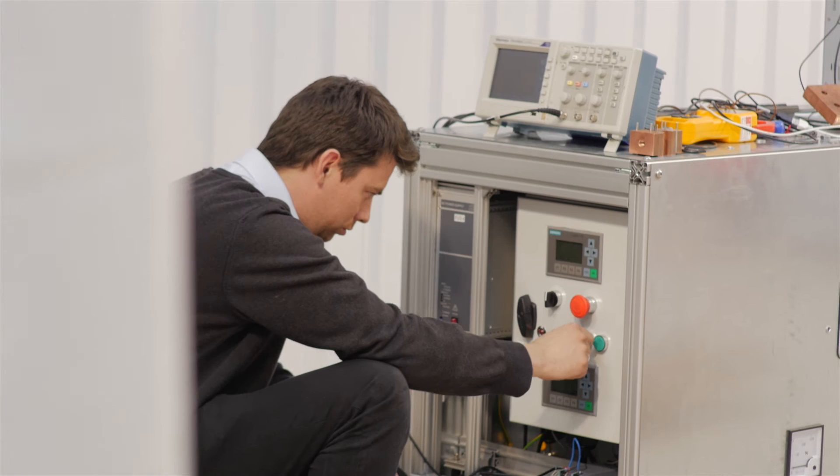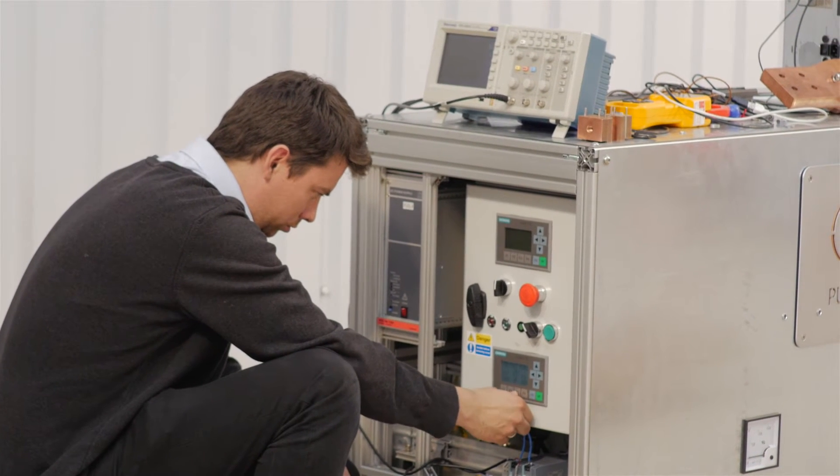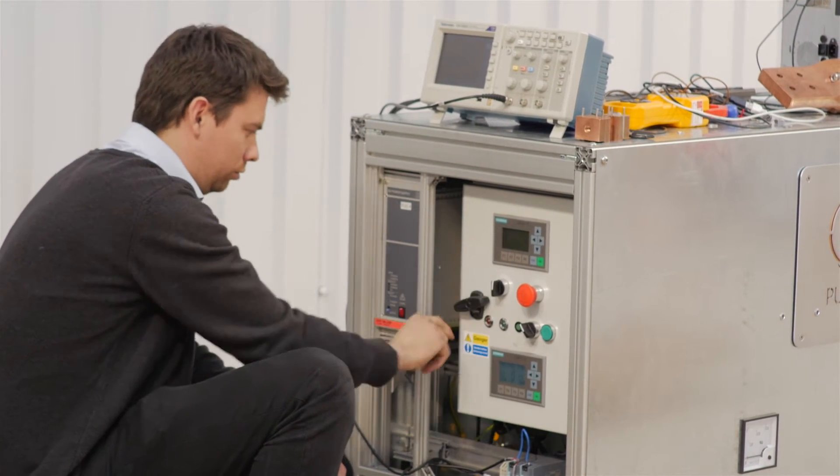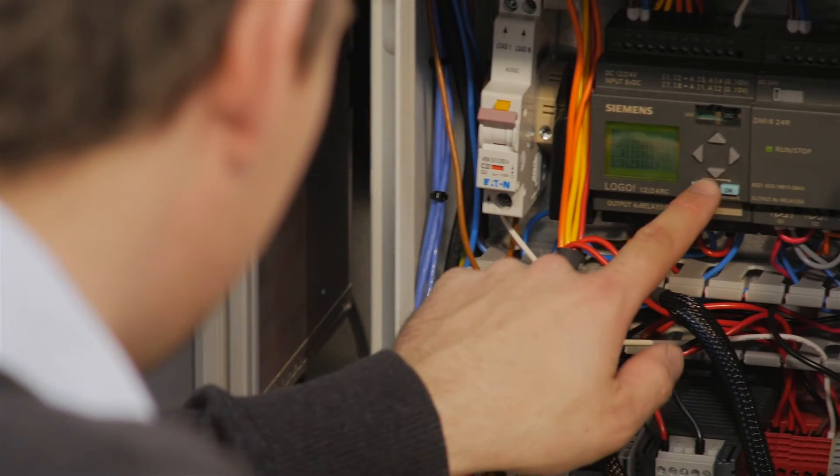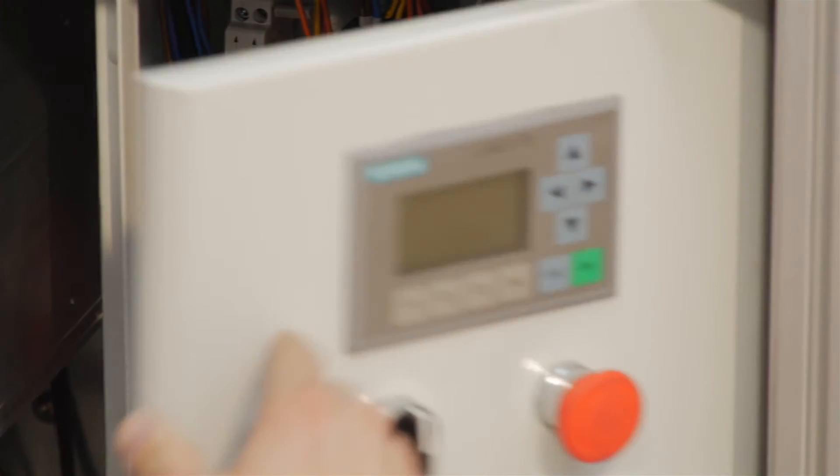What I'll do is attach it up to this power supply over here and pulse large amounts of current through and measure the voltages across different points. By measuring the voltage and knowing the current that's going through, then you can get the resistance.